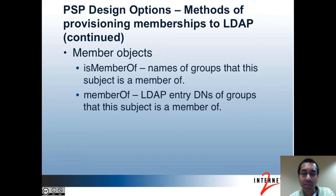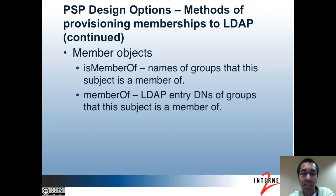Some directory servers actually maintain the MemberOf attribute automatically based on the Member attribute of group objects — Active Directory is an example of this. In the Oracle directory server, you can have similar behavior, except the attribute that contains the DNs of members is the IsMember attribute instead of the Member attribute. The PSP allows you to populate membership data in various different ways that you can customize. You have to make sure to populate it in ways that make sense at your institution and follow the schemas you're using with your directory server software.